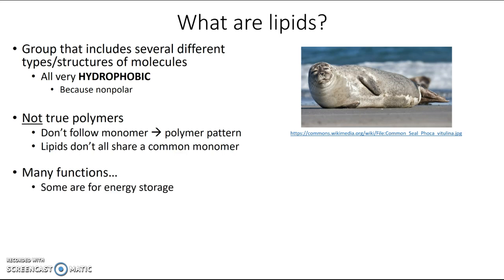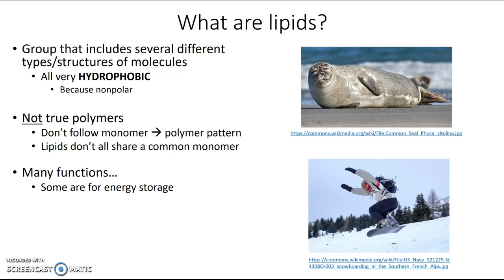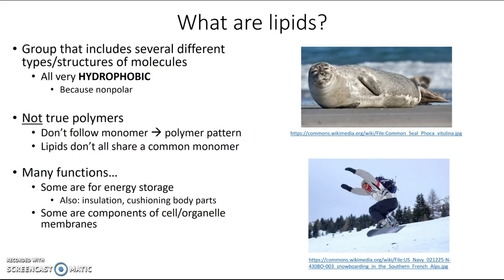But you can also guess that those lipids are helping to keep this seal warm. And if you've ever been snowboarding, you know that certain fat deposits can be really useful for things like cushioning and padding. So another function is insulation and also cushioning. Some other different types of lipids are components or parts of your cell and organelle membranes. And still other types of lipids can function as hormones and are involved in signaling between cells in your body.